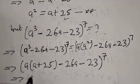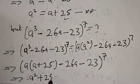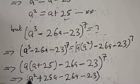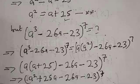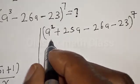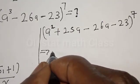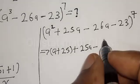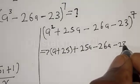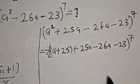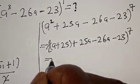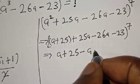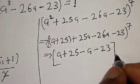This implies that when we open the bracket, a times a gives a squared, and a times 25 gives 25a, so we have a squared plus 25a minus 26a minus 23, all raised to power 7. Here we also have a squared, and our a squared equals a plus 25. So we get a plus 25, plus 25a minus 26a minus 23, all raised to power 7.